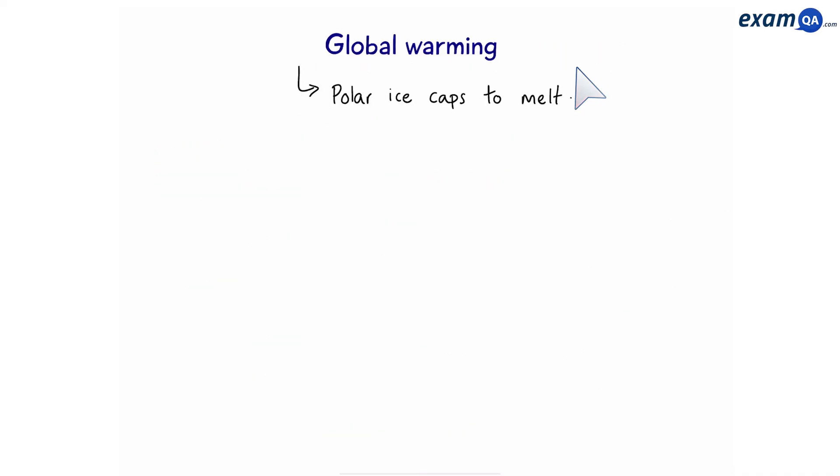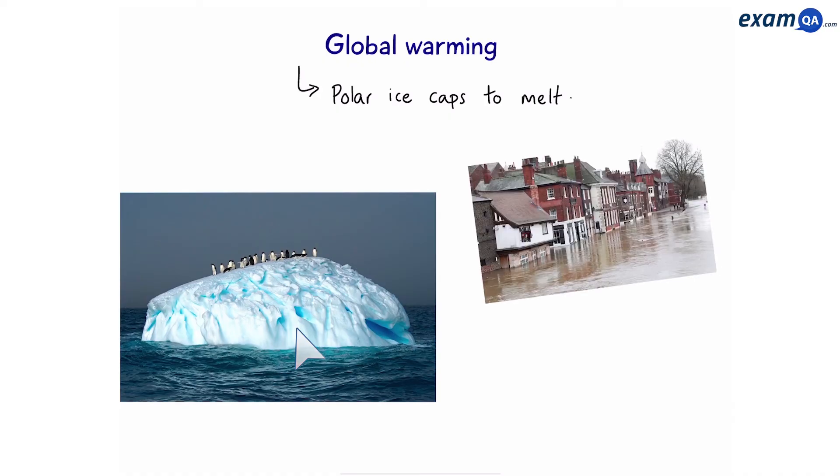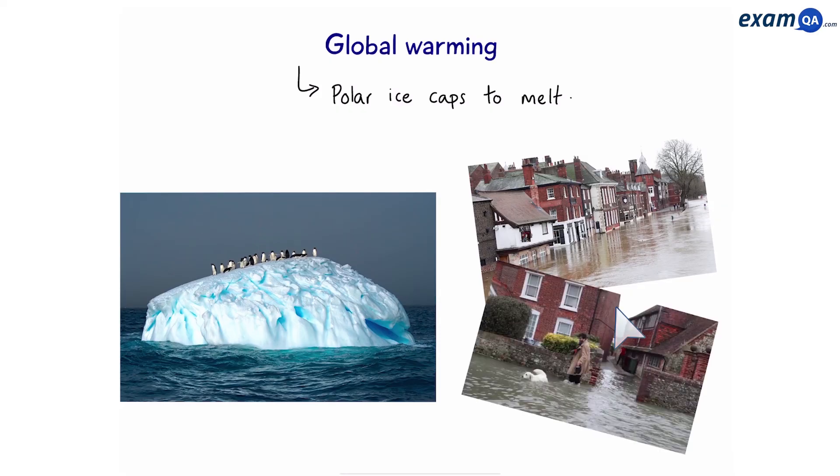Global warming can cause polar ice caps to melt. That means not only is it dangerous for wildlife, but also the melting of polar ice caps can lead to flooding in towns near the coast.